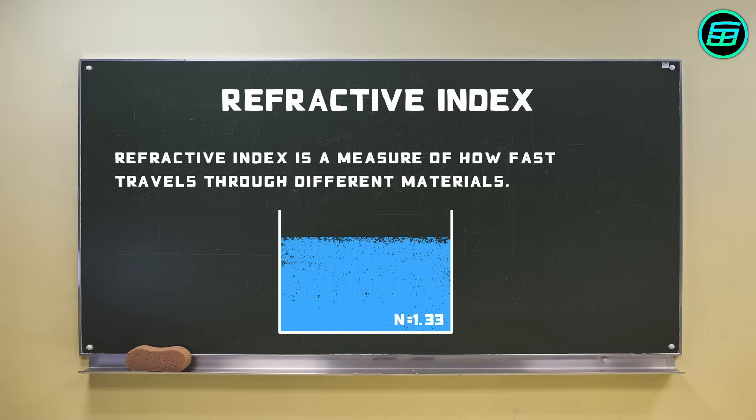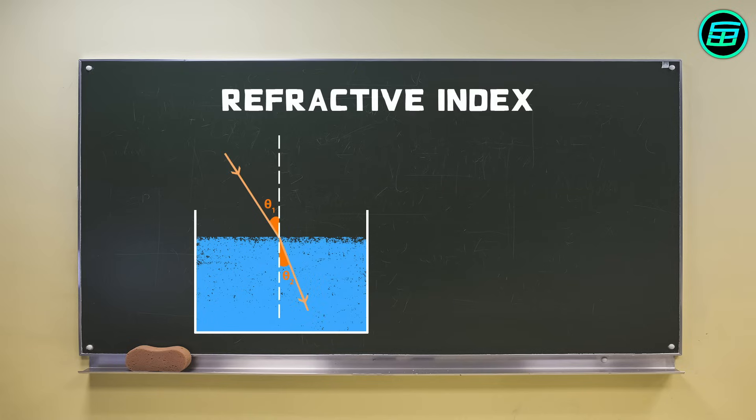The refractive index also determines how much the path of a ray of light is bent or refracted when entering a different environment. If light passes from air into water, its path is bent away from its angle of incident.